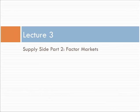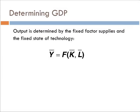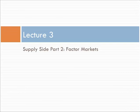We need to have a labor market and a capital market. In those markets, we need to determine the equilibrium quantity of labor and the equilibrium price, or the wage rate. And the same for capital — the equilibrium quantity of capital and the rental price of capital.